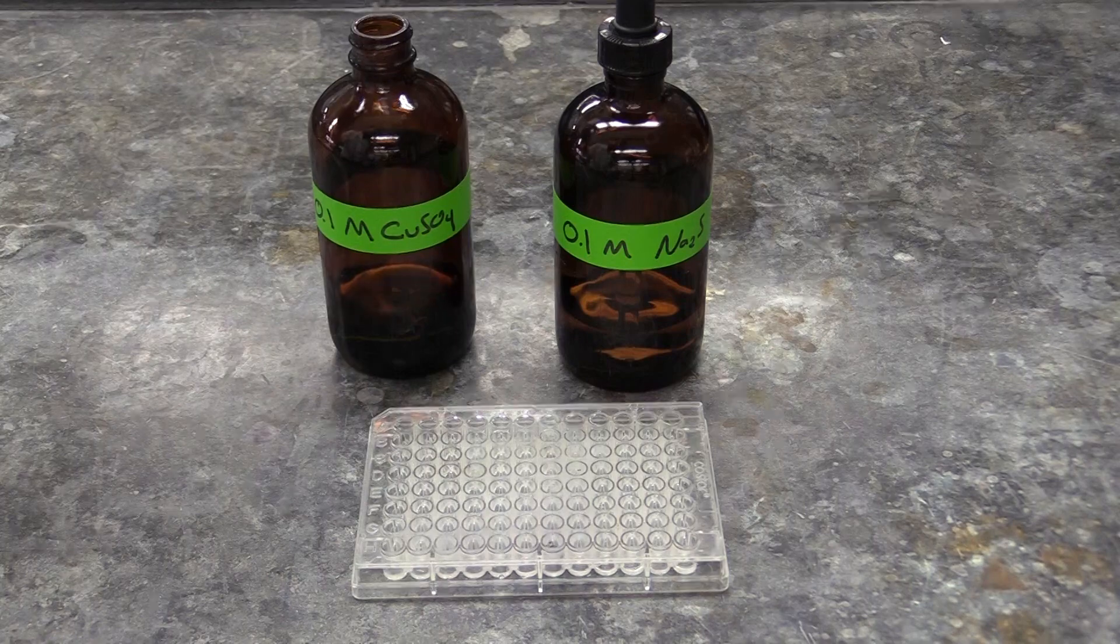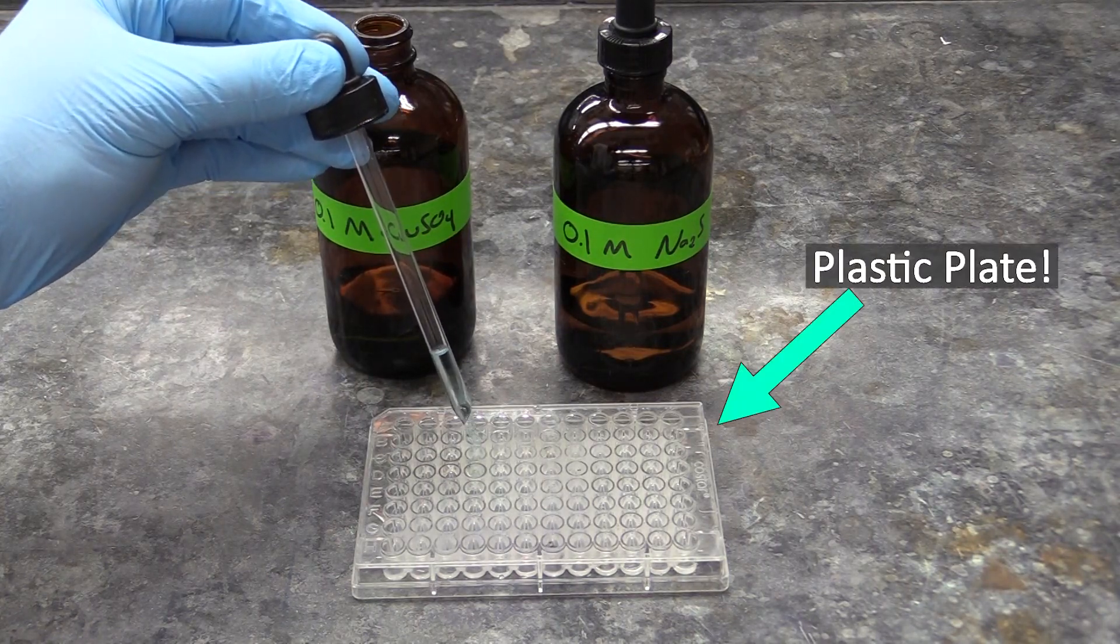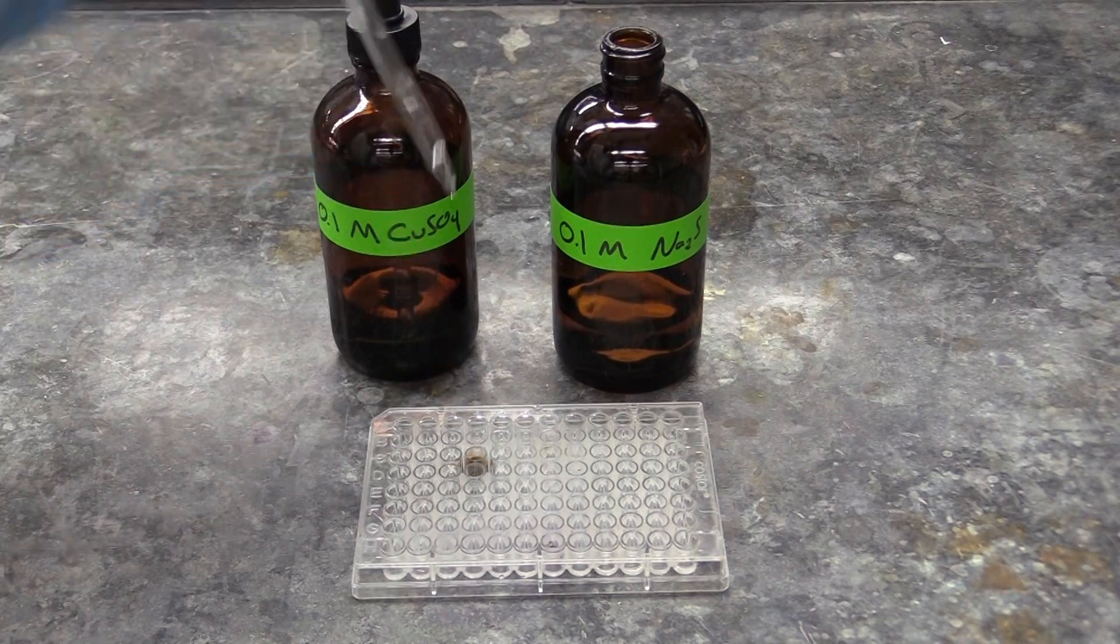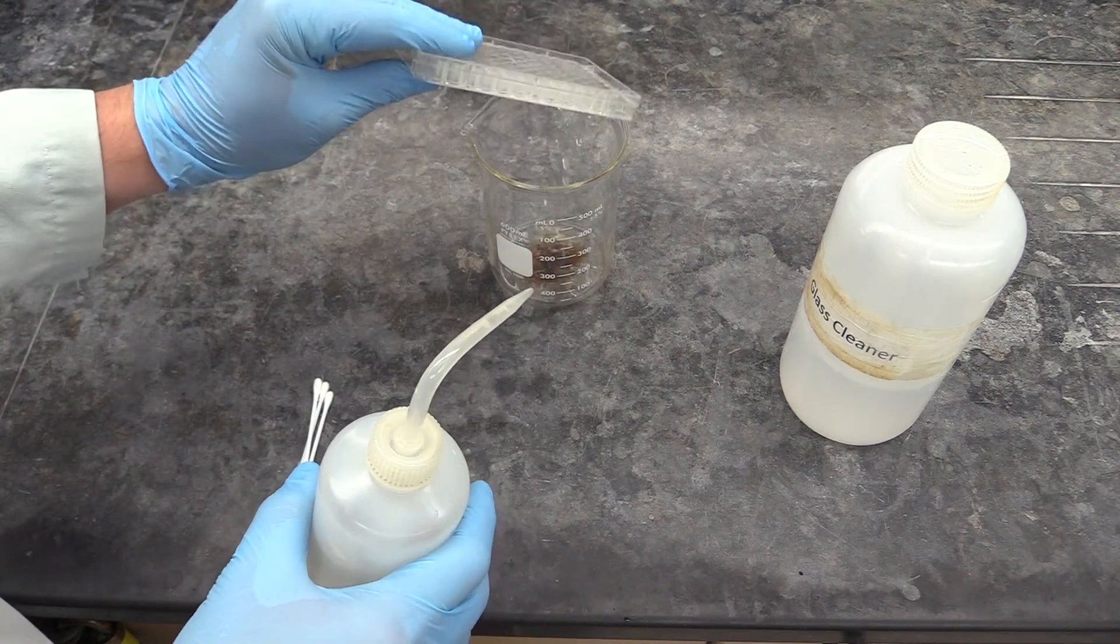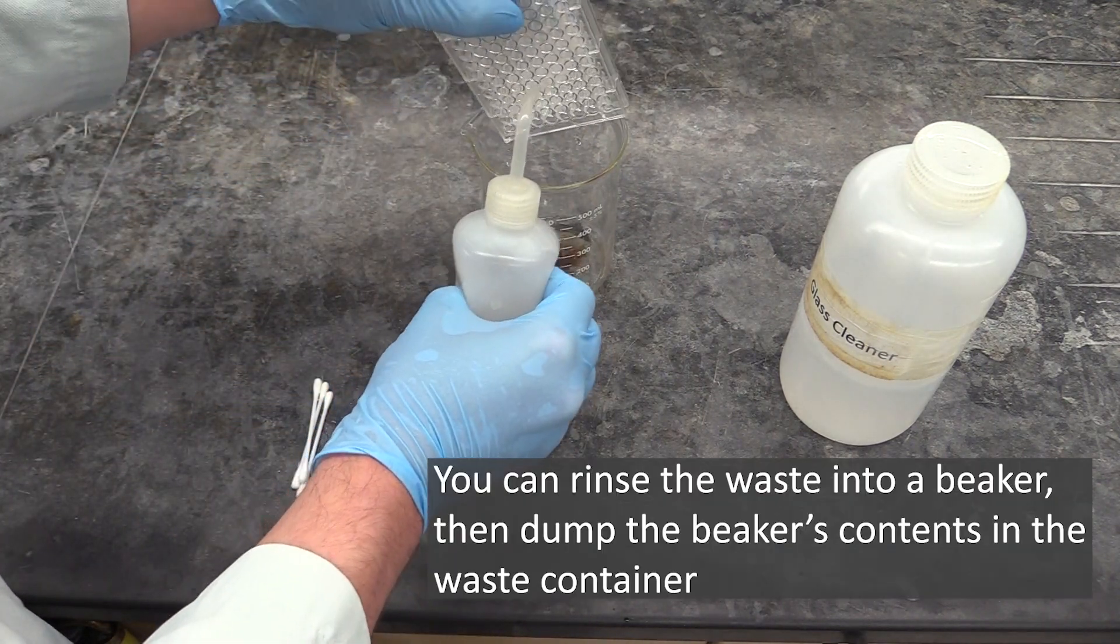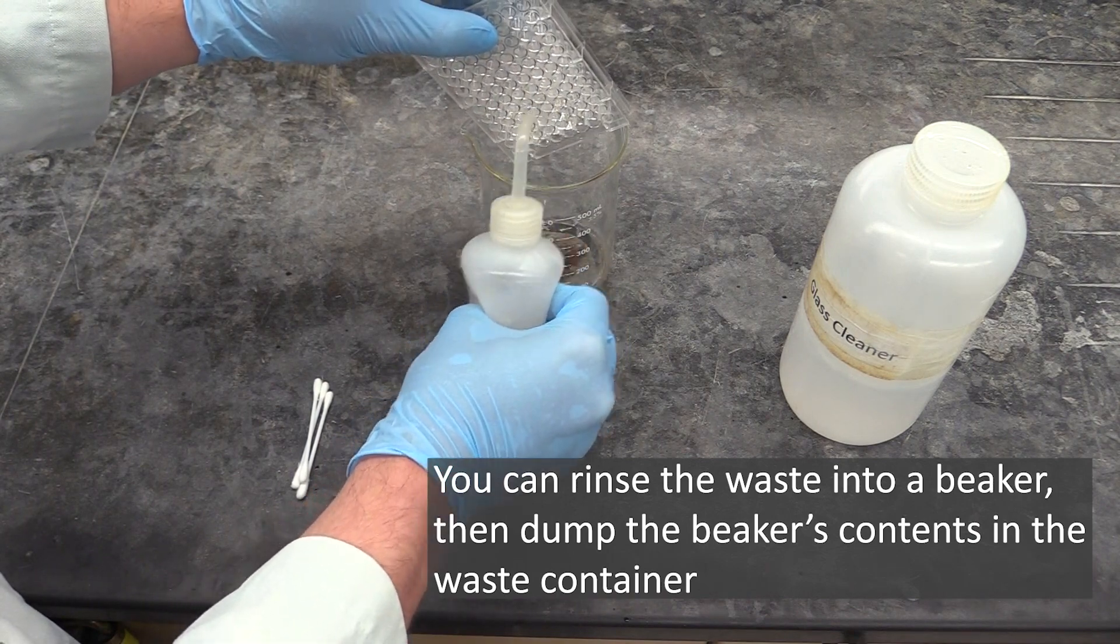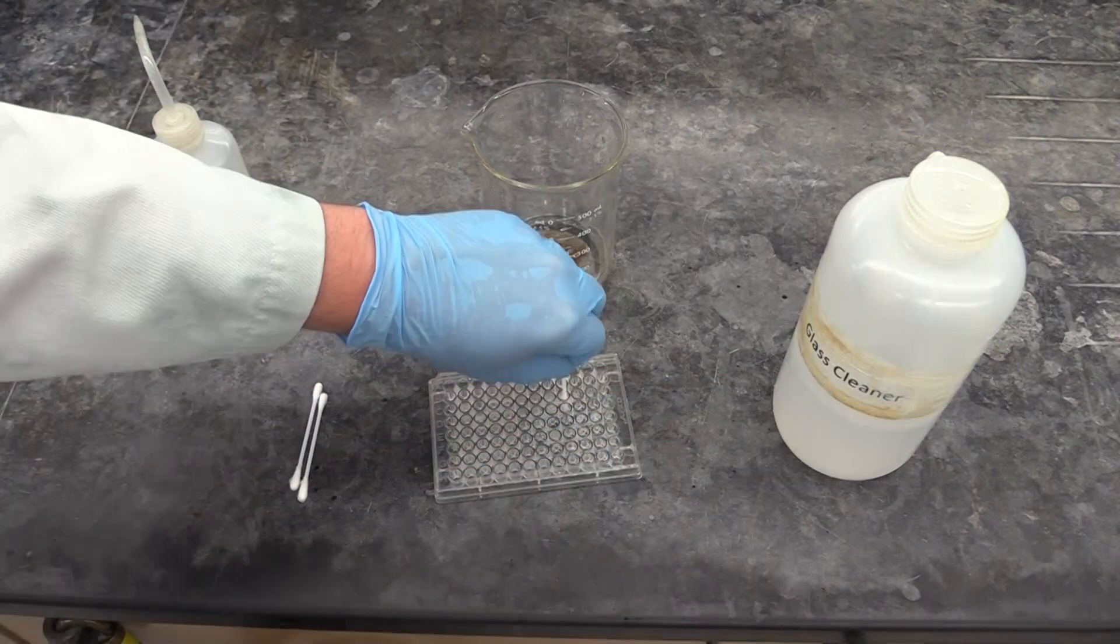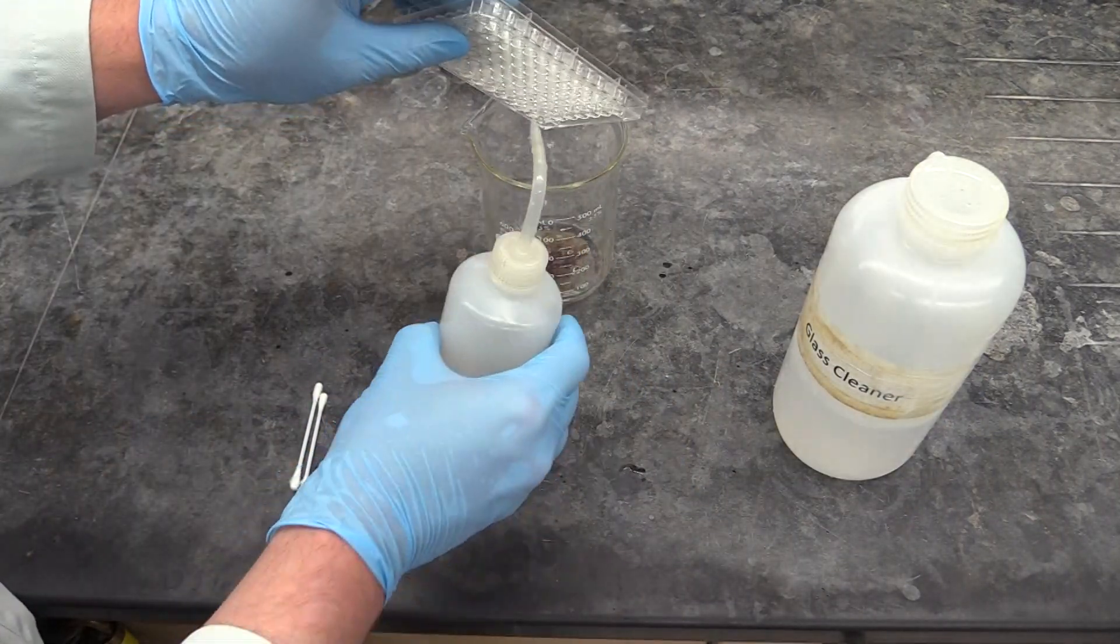For the precipitation experiment itself, you'll mix the soluble solutions together in a plastic plate. This plate has small wells, so you'll only need to use two or three drops of each solution. When you're done, dispose of the solutions you added to the plate in the lab room's waste container, then add some glass cleaner to the wells, scrub them out, and rinse it thoroughly.